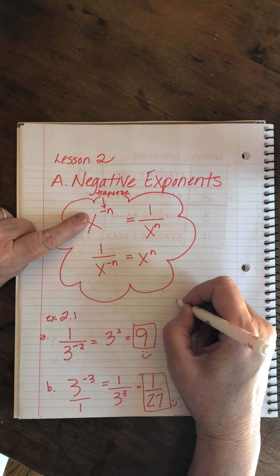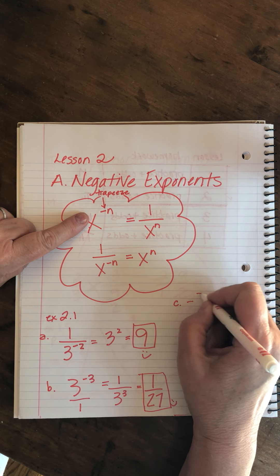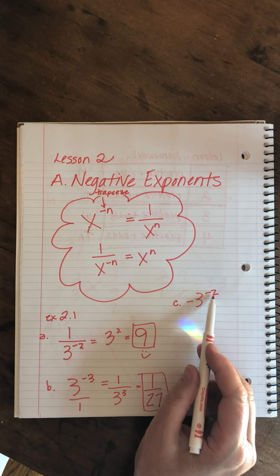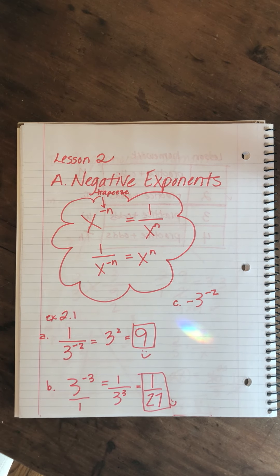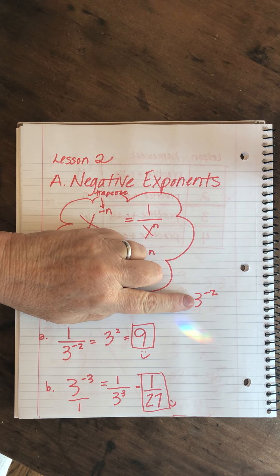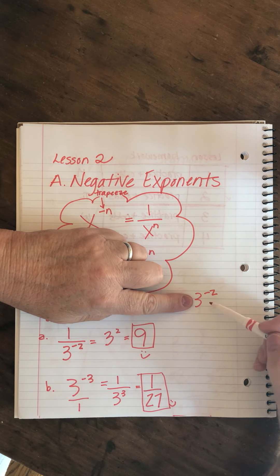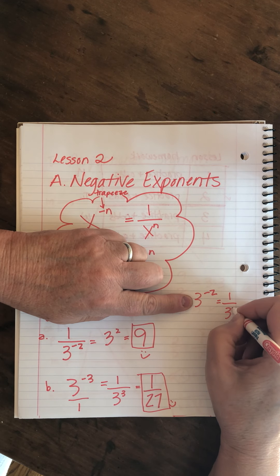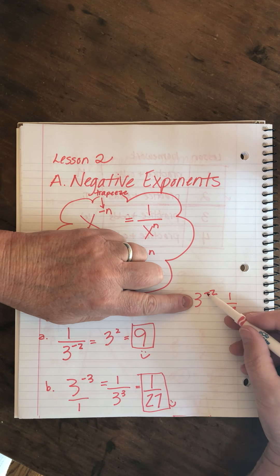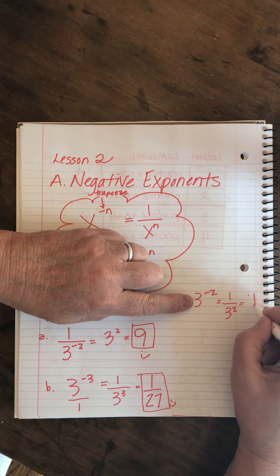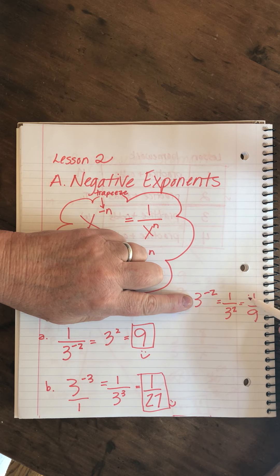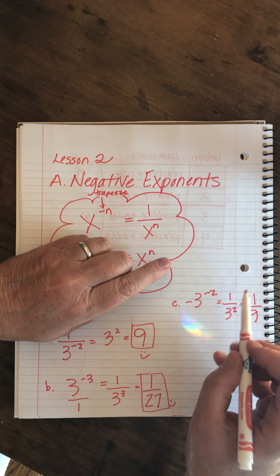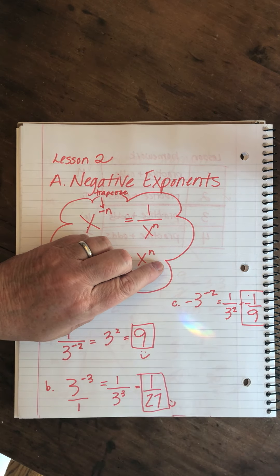C is minus 3 to the minus 2. We have a minus sign out here that means something altogether different. Since it's not protected by parentheses, we cover it up, then simplify: it's in the numerator, so we flip it down, copy the exponent but burn off the minus sign. Now we put the minus sign back — the answer is minus 1 ninth. That's correct.